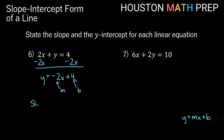That tells us our slope for this one is negative 2. And if our b is 4, then our y-intercept is the point (0, 4).